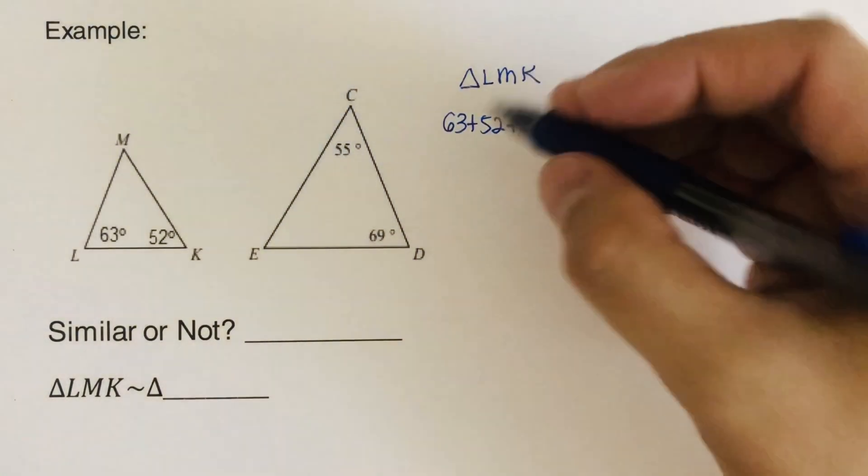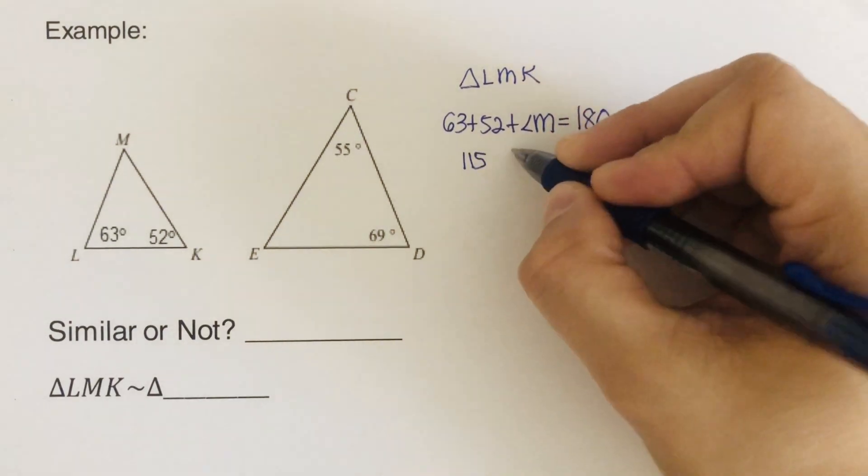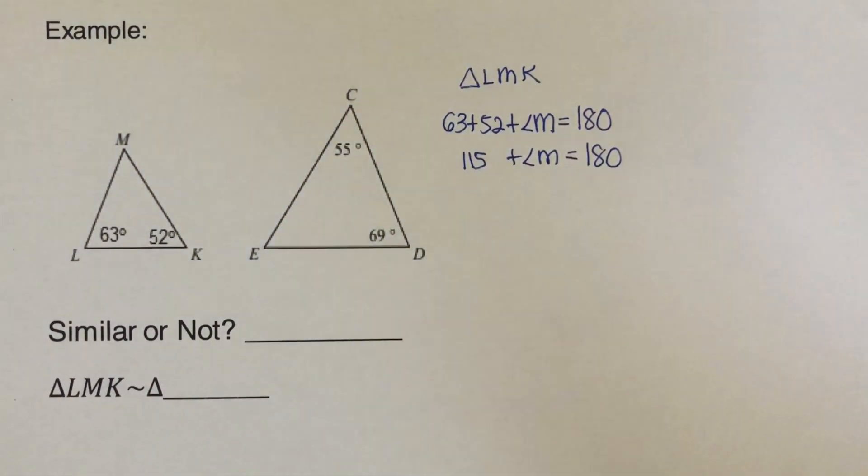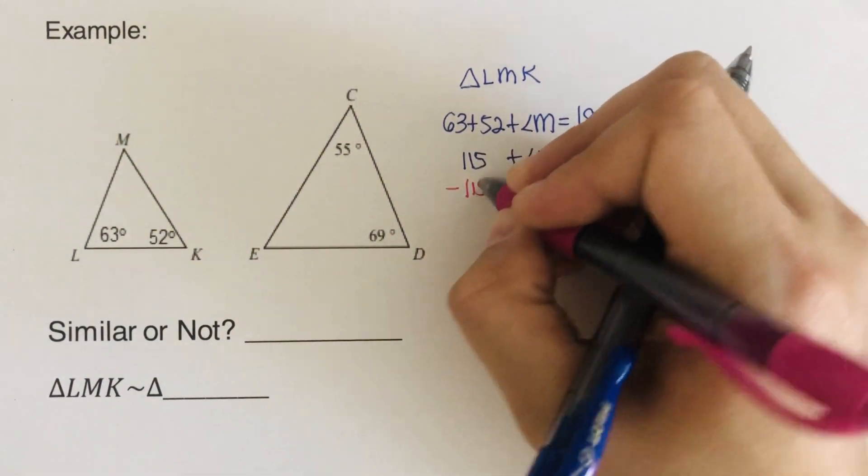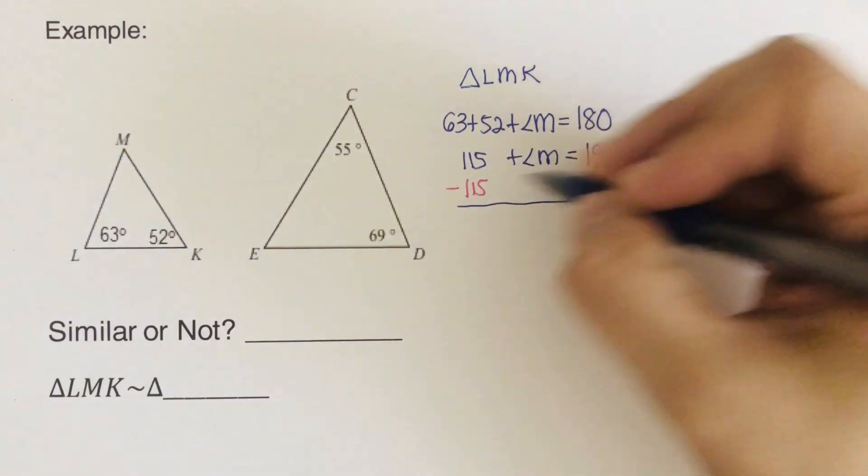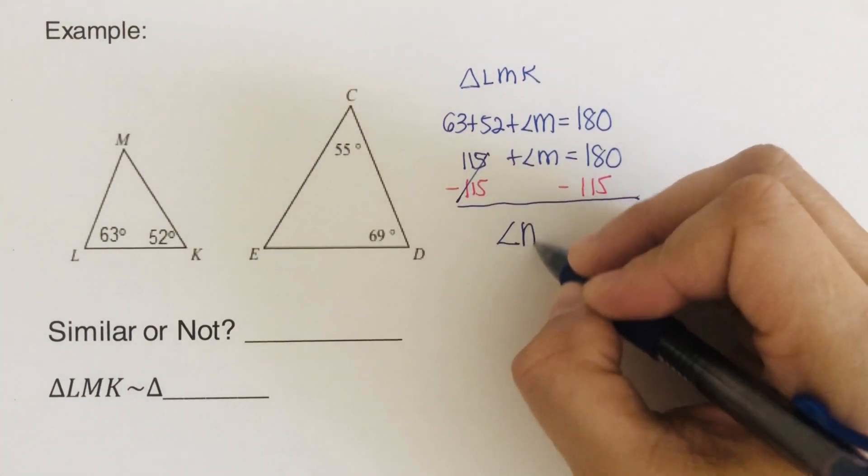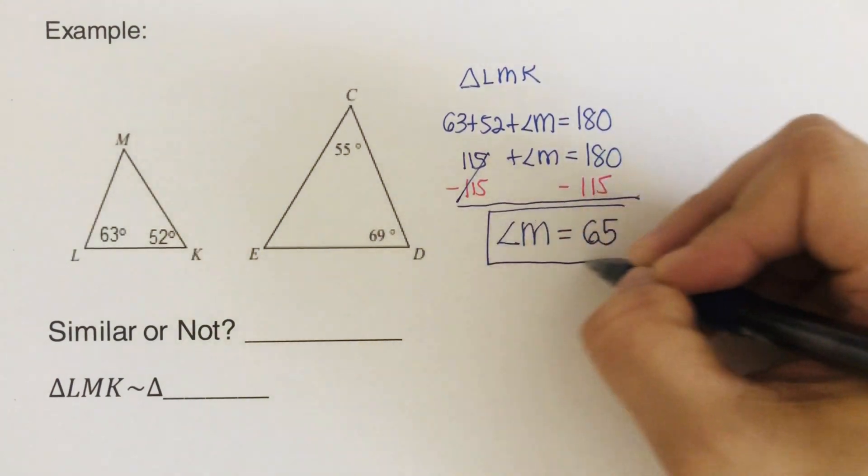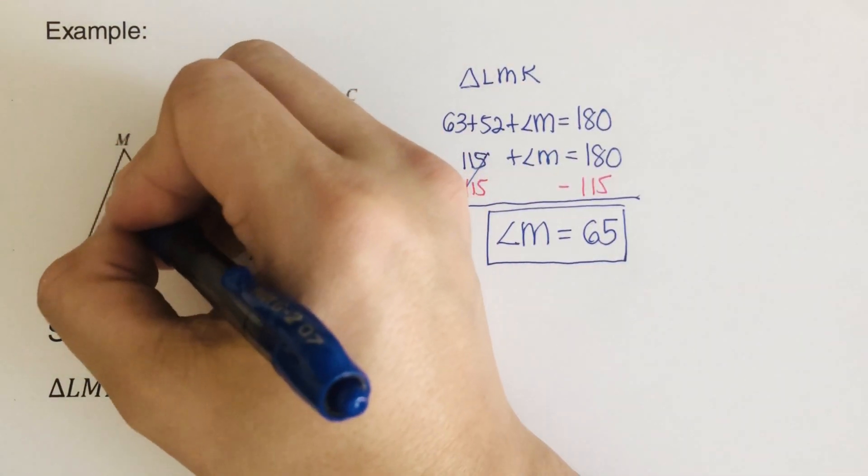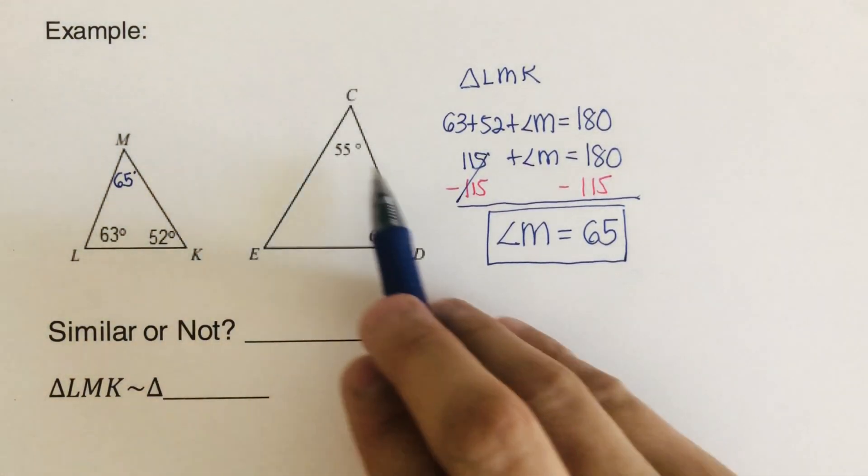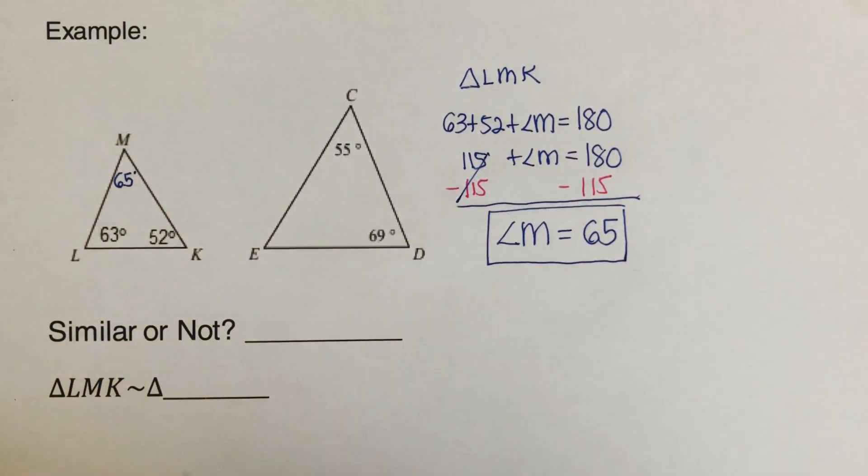So from here, we subtract 115 minus 115. So we can cross 115 out. We're left with angle M is equal to 65. So this angle right here is 65. Can we spot angles that are congruent? So far, we don't have anything.